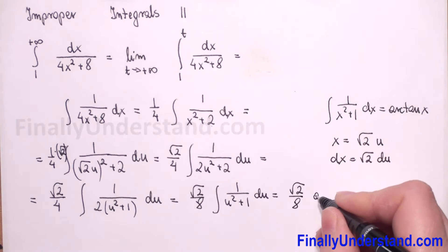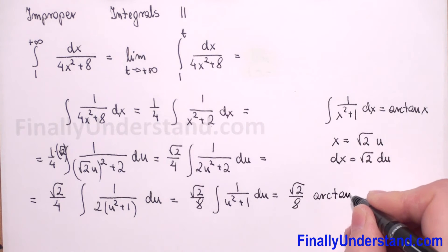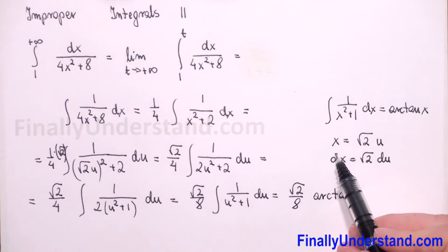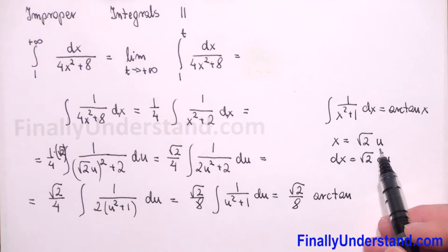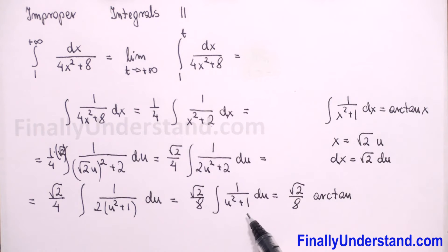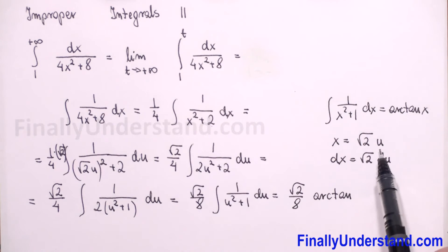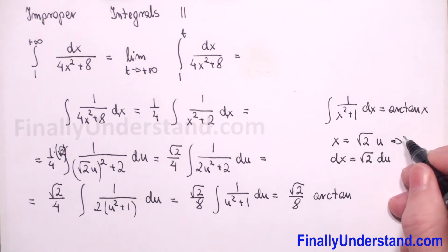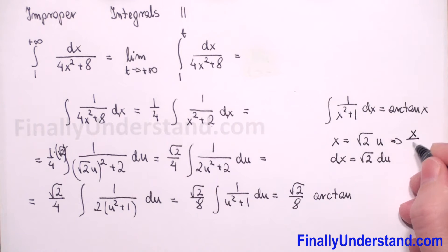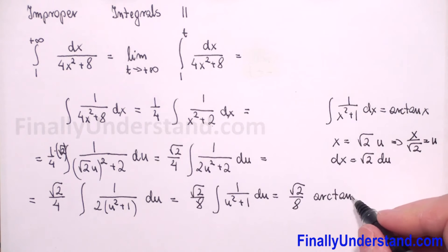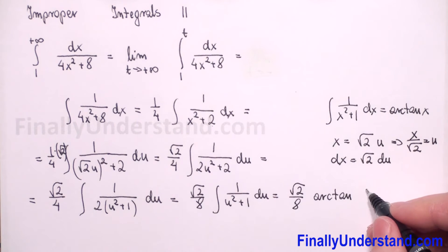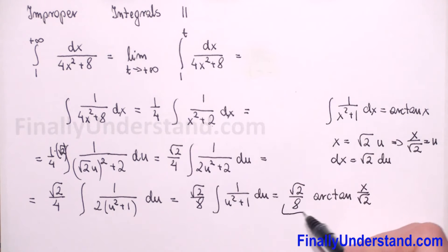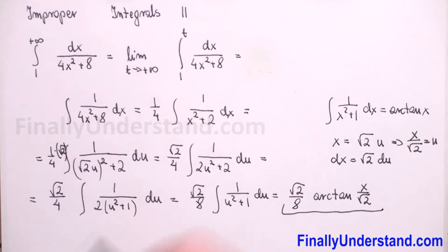As I mentioned, this integral equals arctangent. We have the constant square root of 2 over 8 times arctangent. Because we substituted x with square root of 2 u, we now back-substitute: dividing both sides by square root of 2 gives u equals x over square root of 2. So our antiderivative is square root of 2 over 8 times arctangent of x over square root of 2.